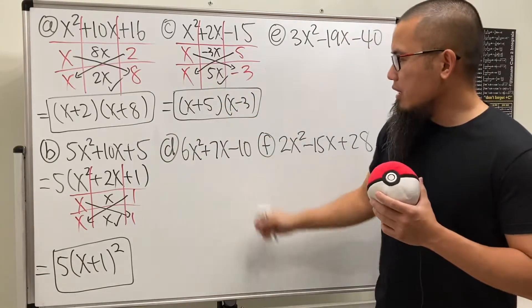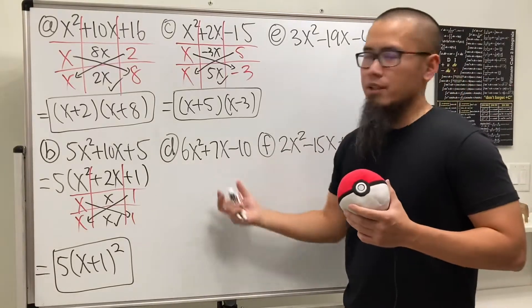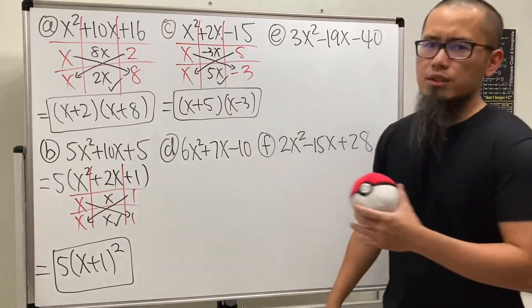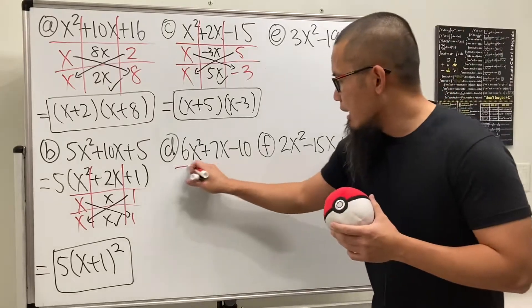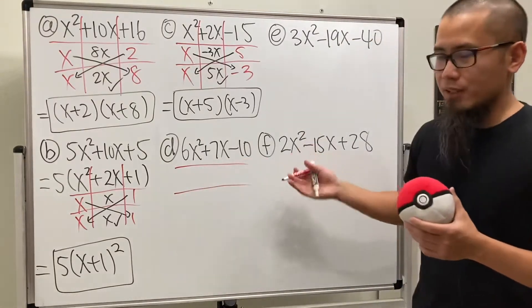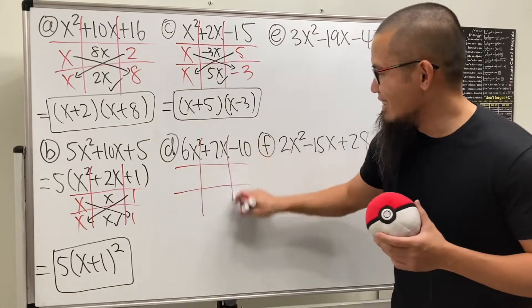Now for D, unfortunately we cannot factor out any common factor. But it's okay. Let's just go ahead and do the tic-tac-toe. And by the way, all these examples are factorable. So just keep that in mind.